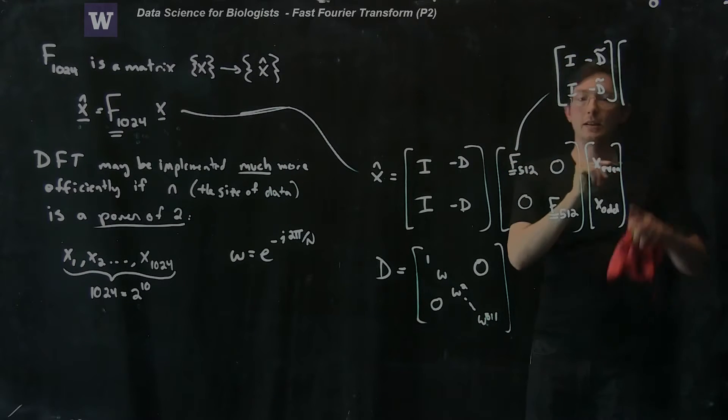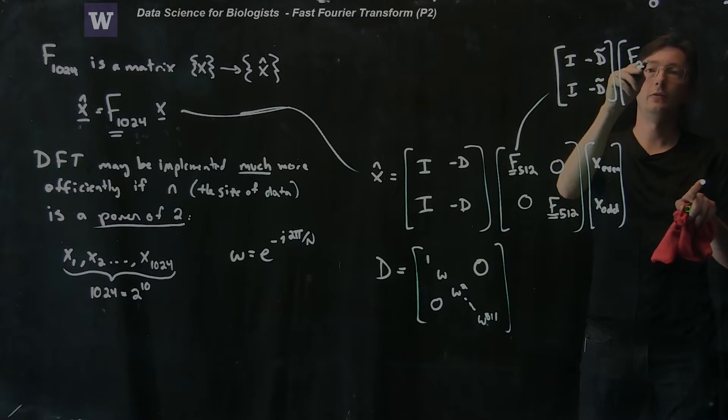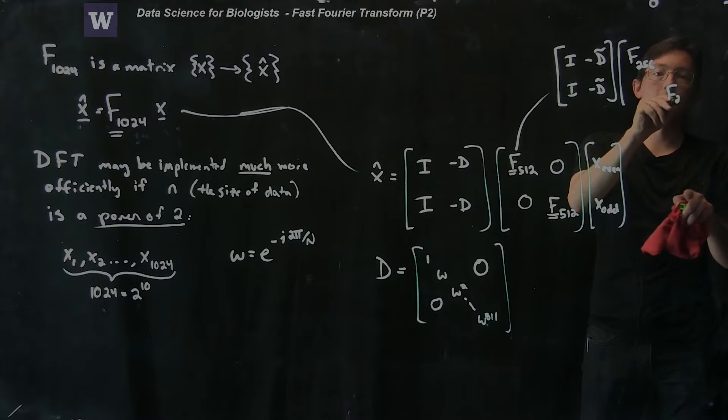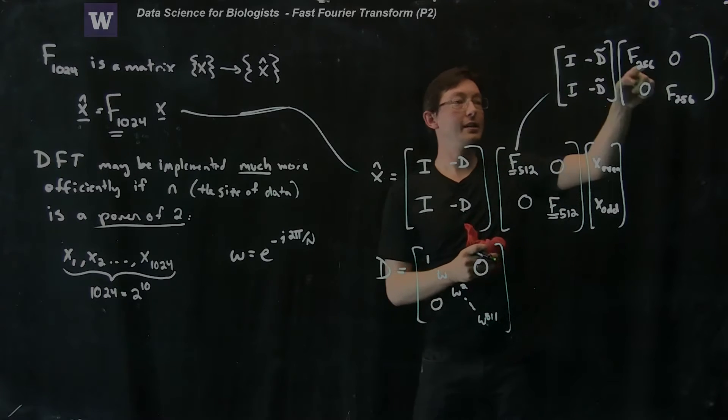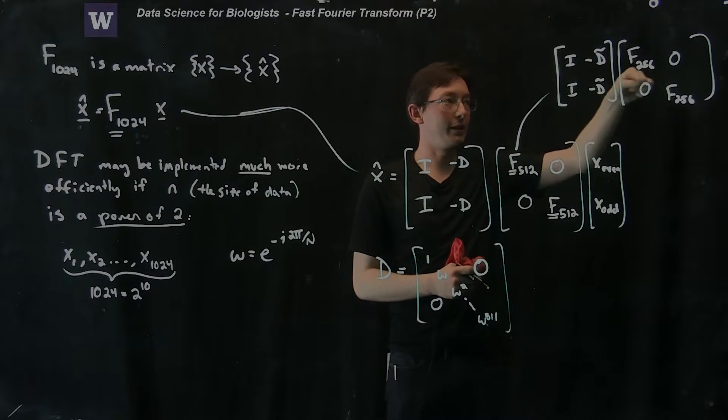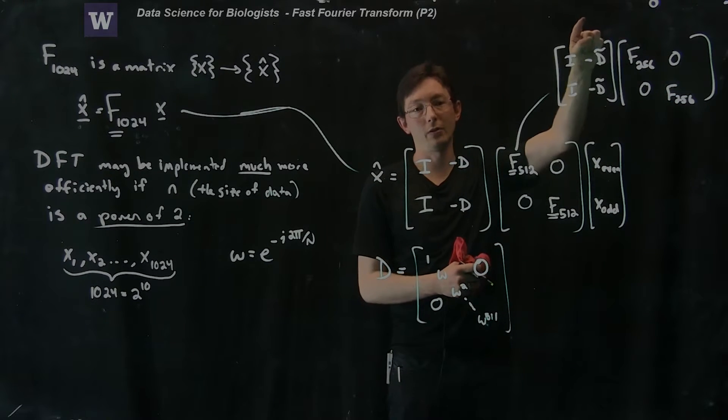I can have a new identity, identity, minus D, minus D, this is a different D, times F256, F256, 0, 0. And now this is a smaller problem still. I can break this F256 up into F128, 128.